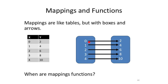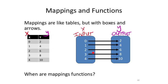A mapping shows ordered pairs using arrows between two columns. The left column is your input — x values — and the right column is your output — y values. An arrow from 0 to 2 means the ordered pair (0, 2). The mapping and the corresponding table communicate exactly the same information — it doesn't matter which format is used.